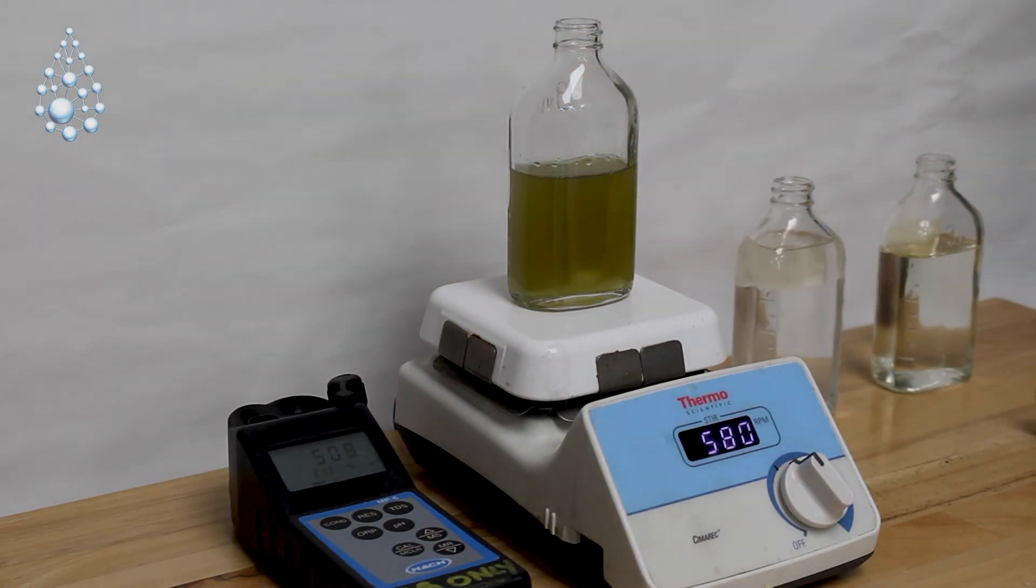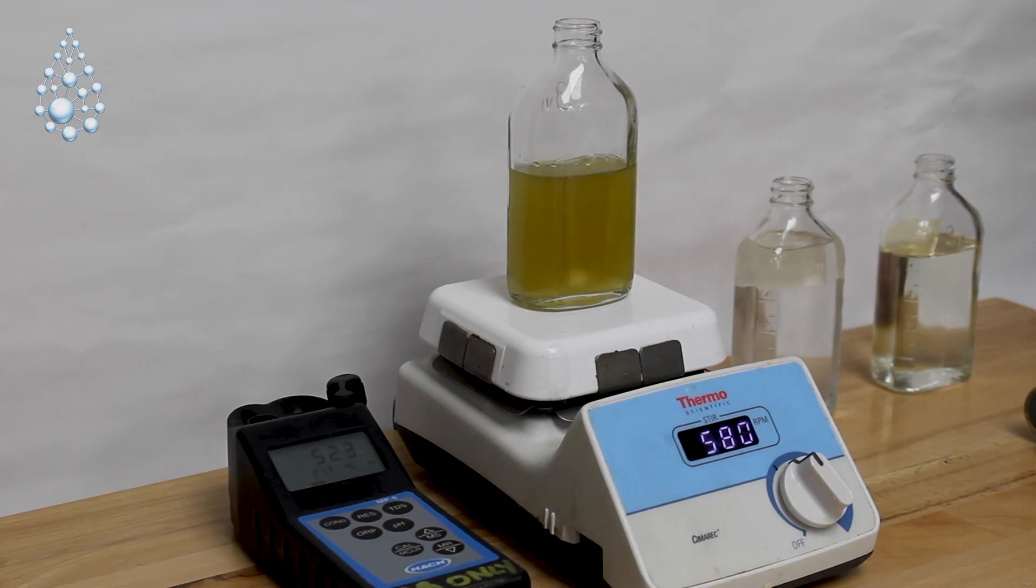What we're going to watch is the ORP value. You can see we've already changed from black to yellow. It'll golden up as that ORP increases. Then what we want to look for is a color change. That color change tells us as it moves from gold to clear that the iron has been bound and pulled into solution. And there it goes.